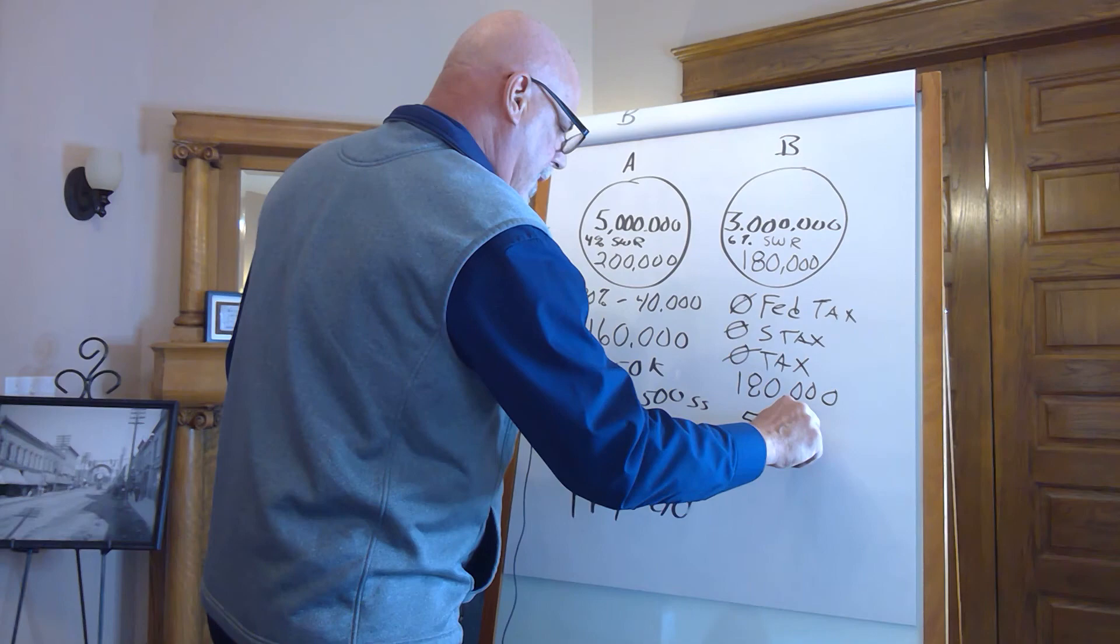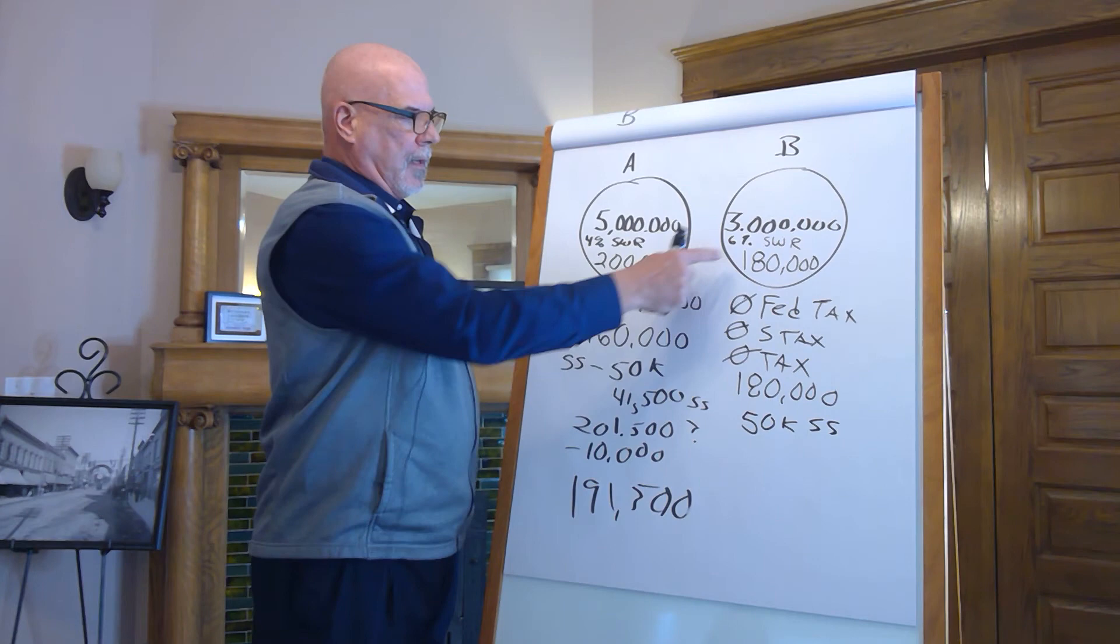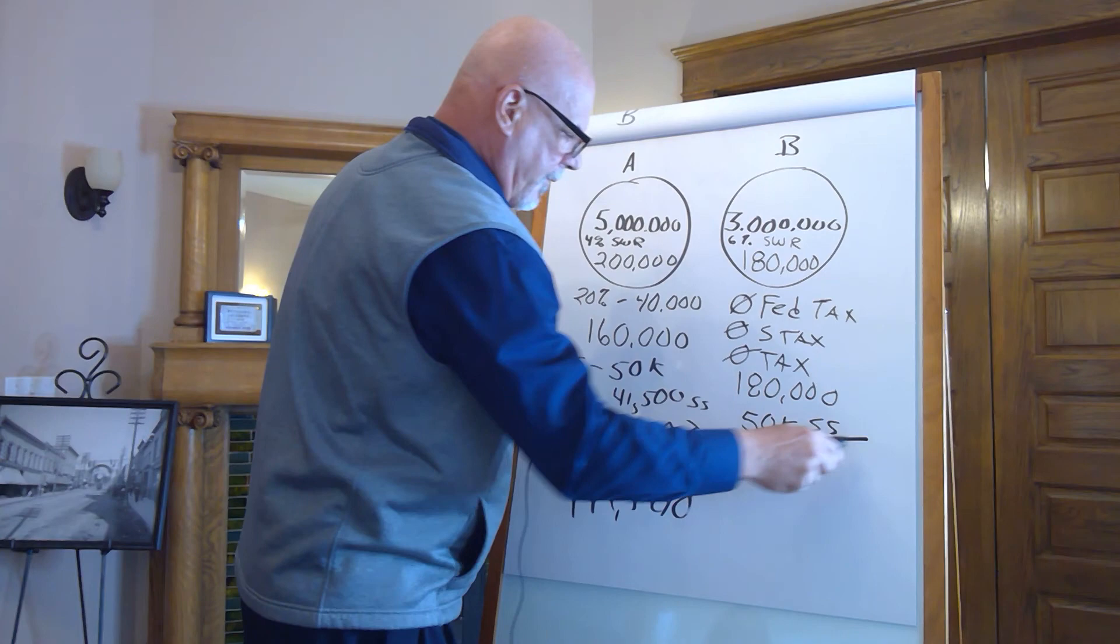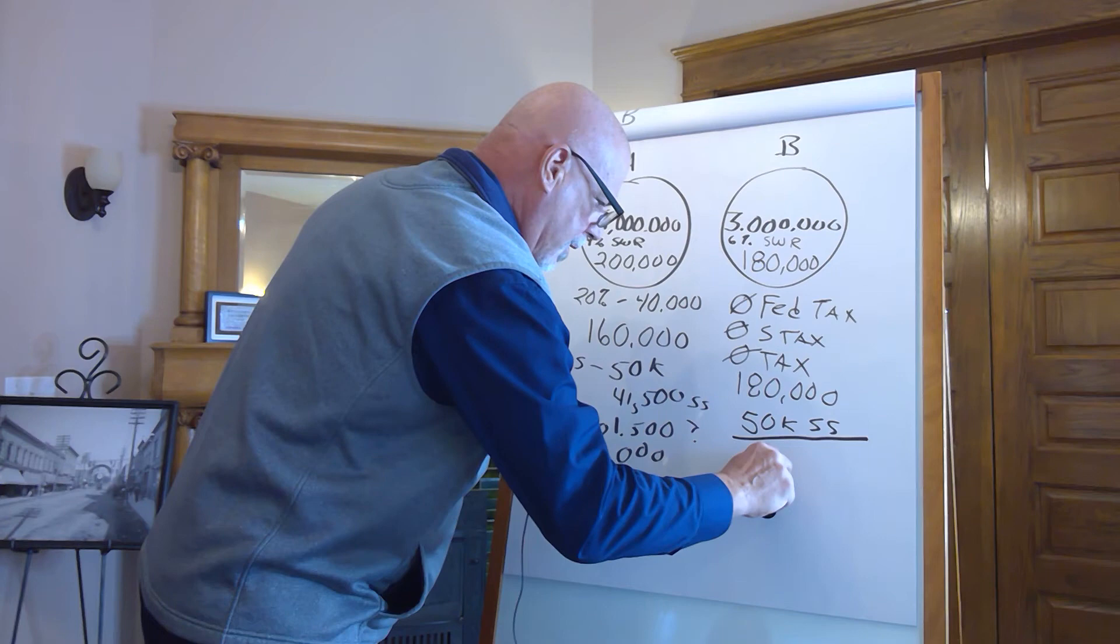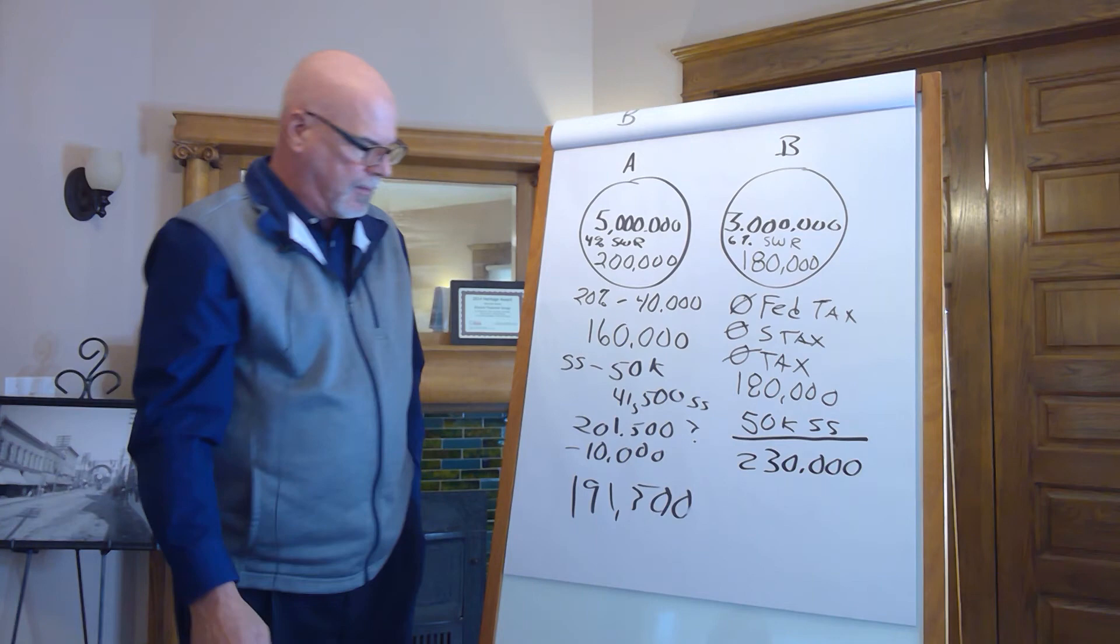Take it one step further. Husband and wife gets $50,000 in Social Security. Because of this and where it lives, it's treated differently than this. You get to keep it all. No taxes. So now, you've got $230,000 that you can spend.